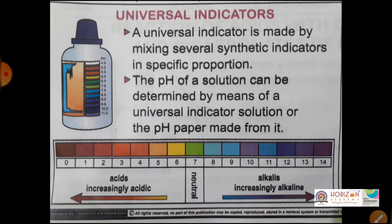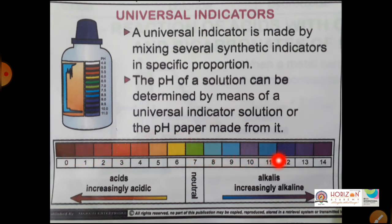pH paper is made from universal indicator. The pH value ranges from 0 to 14, with 7 in the middle. If pH value is 7, the solution is neutral. If pH value is decreasing below 7, acidity is increasing. If pH value is increasing above 7, then the basic or alkaline nature of the solution is increasing.